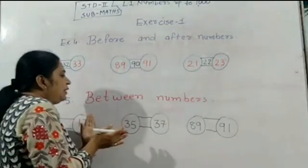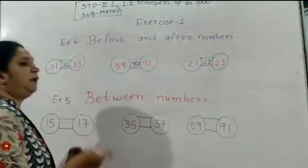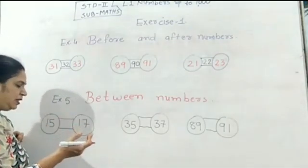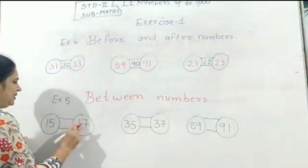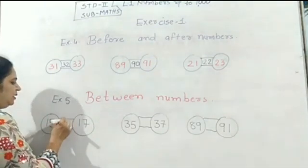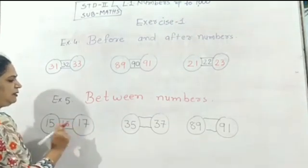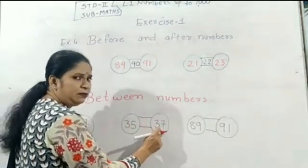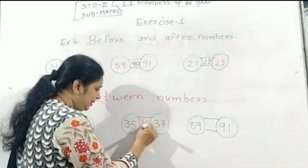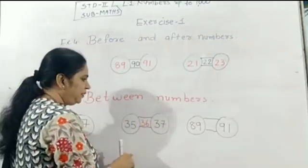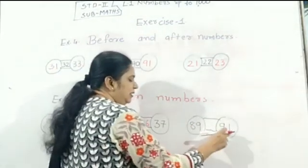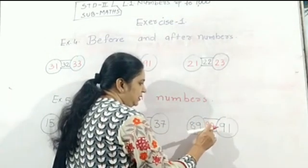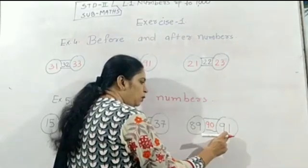For exercise 5, we have to write down the between numbers — the number in the middle of two given numbers. For example, between 89 and 91, the between number is 90, then 91.